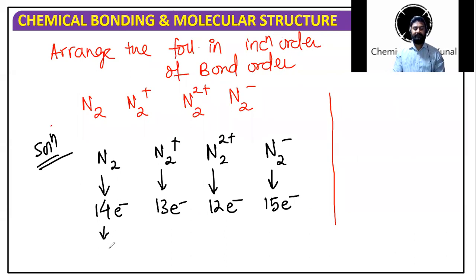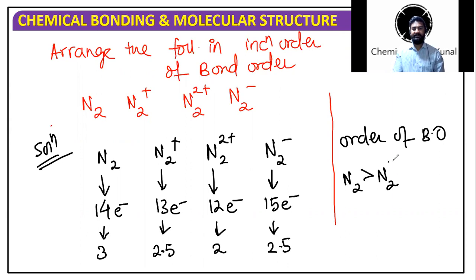For 13, it is one less than that, so 2.5. This will be 2 and this will be 2.5 again. So what's the order? The order of bond order will be N2 2+ is the highest, then N2+ and N2- will be equal in terms of bond order, and then N2 will come. This becomes the order.